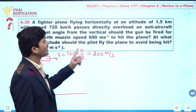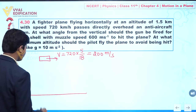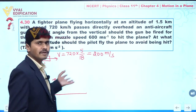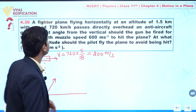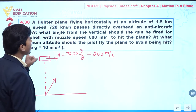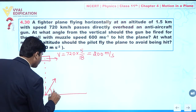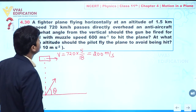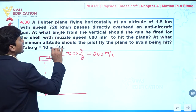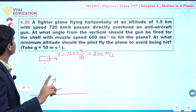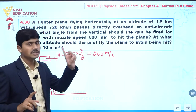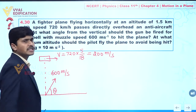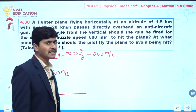When the plane passes overhead an anti-aircraft gun — let us suppose here we have an anti-aircraft gun from where we are actually firing some cannon. At what angle from vertical should the gun be fired so that the shell with muzzle speed 600 meter per second hits the plane? So velocity of projection is given as 600 meter per second.